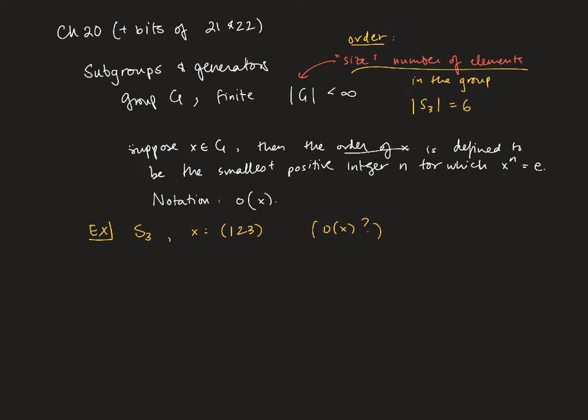I essentially what I can do in this case is just multiply X. Well, X to the one is (1,2,3), and that is not the identity. So the order isn't one. X squared, if we do (1,2,3) times (1,2,3), we get (1,3,2). I'll let you check that. But that's also not the identity.